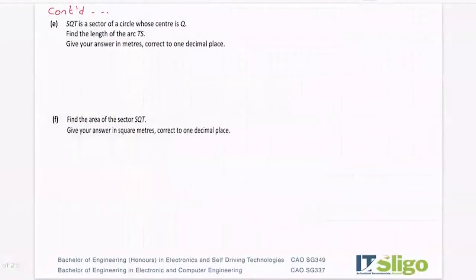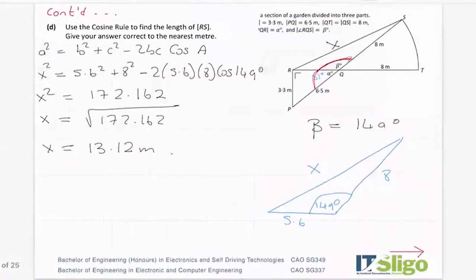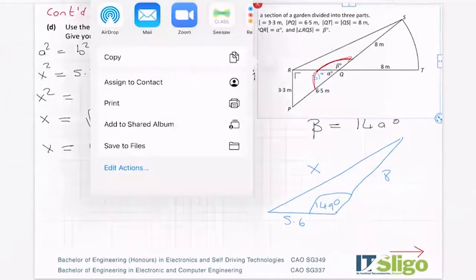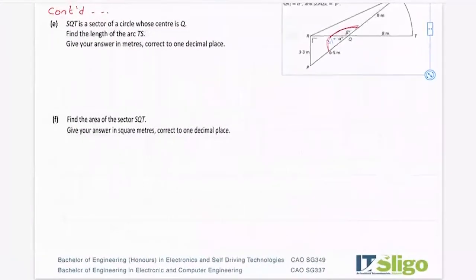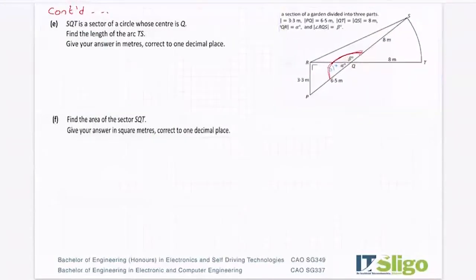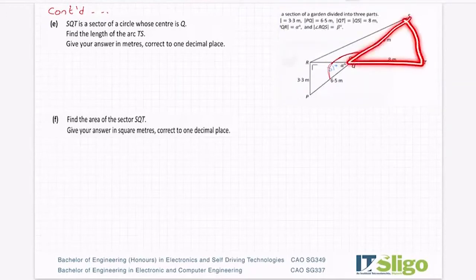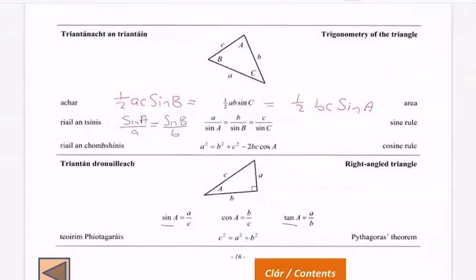Now, SQT is a sector of a circle whose center is Q. Find the length of the arc TS. So again, let's copy the diagram onto the next page. So we always have it there in front of us. So SQT is a sector of a circle whose center is Q. Find the length of the arc TS. Give your answer in meters correct to one decimal place.